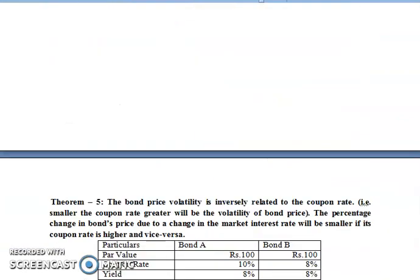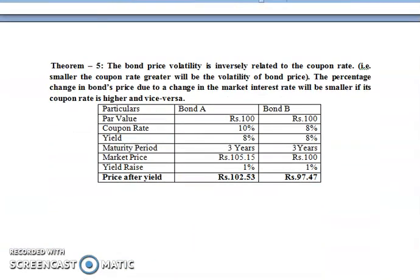The last theorem is theorem 5: bond price volatility is inversely related to the coupon rate. That is, smaller the coupon rate, greater will be the volatility of bond price. The percentage change in bond price due to a change in market interest rate will be smaller if its coupon rate is higher, and vice versa.